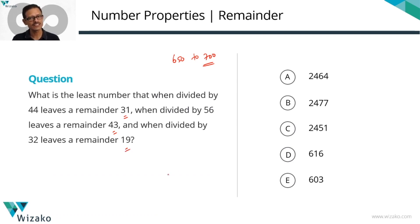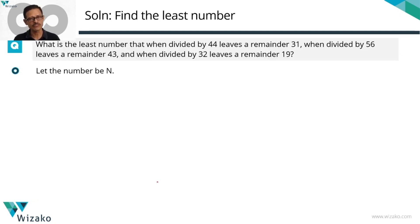Three different divisors, three different remainders. We need to find out the least number that would satisfy all of these conditions. Let's assign a variable. Let's say that number is N, the number that we are interested in finding out.